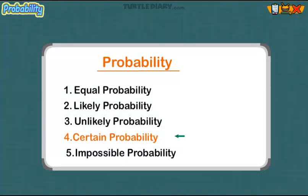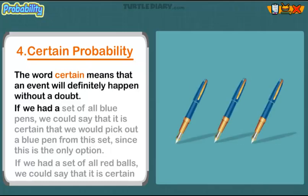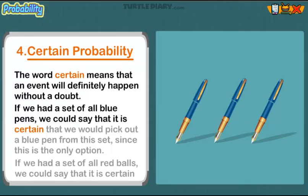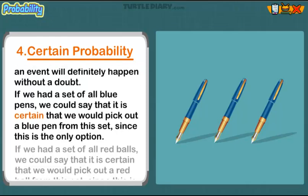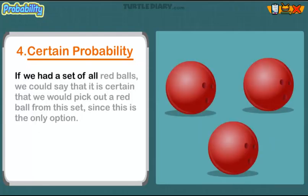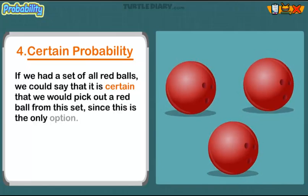Certain probability. The word CERTAIN means that an event will definitely happen, without a doubt. If we had a set of all blue pens, we could say that it is CERTAIN that we would pick out a blue pen from this set, since this is the only option. Similarly, if we had a set of all red balls, it is CERTAIN that we would pick out a red ball, since this is the only option.